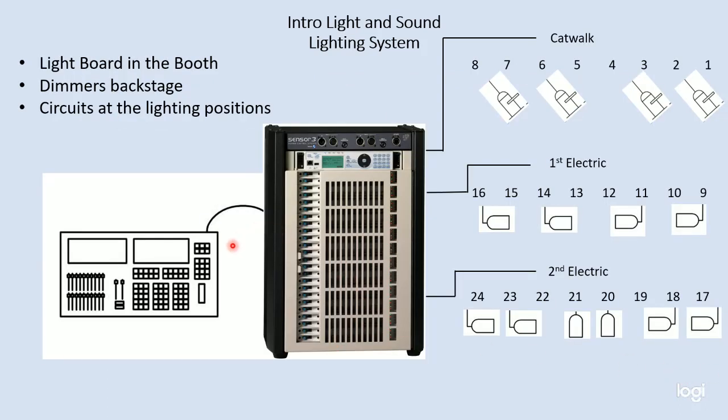As we move up in complexity a little bit, if we were in the theater, the light board is going to be out front — it's going to be in the booth, maybe near the stage manager, somewhere where the operator can see it. Our dimmers are often located backstage because they require a lot of power, so they're going to be nearer to power, somewhere where their fans aren't going to make noise.